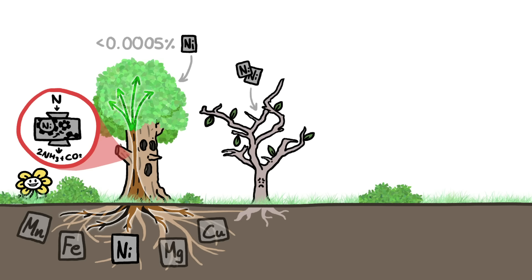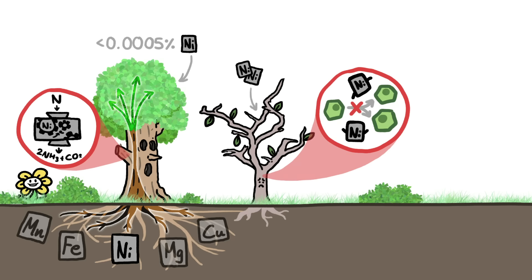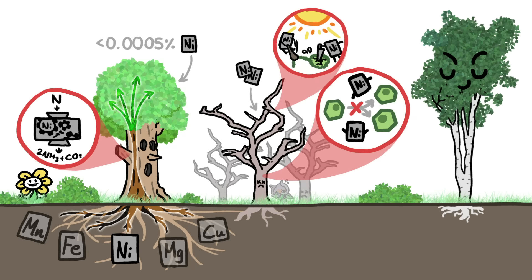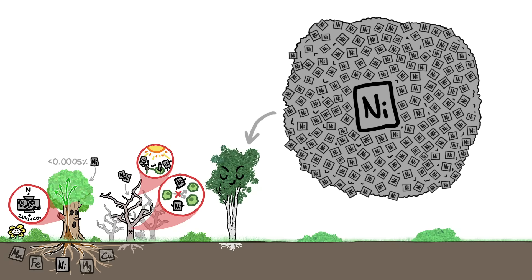Any more than that is usually toxic. Surplus nickel inhibits cell division and harms the chlorophyll needed for photosynthesis in leaves, all leading to very dead plants. So how do metal-hoarders survive with 50,000 times the normal amount? And what do they do with it?